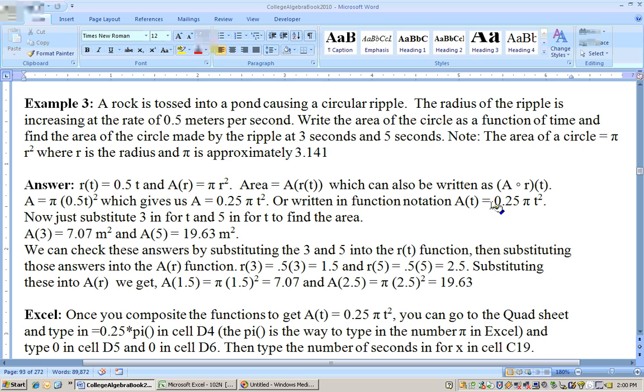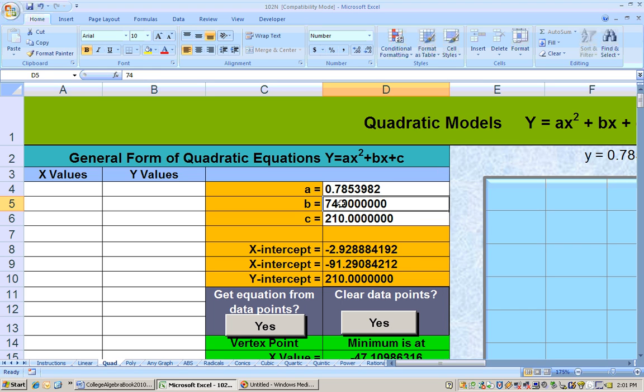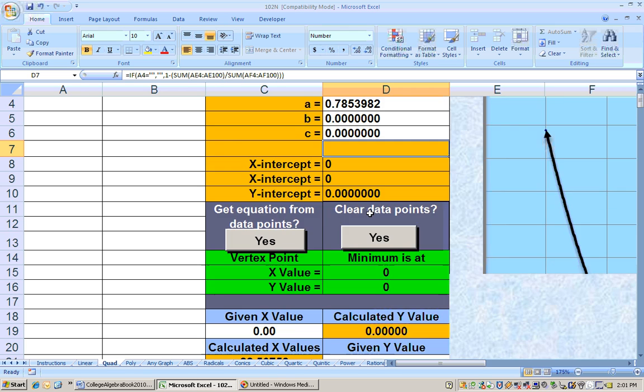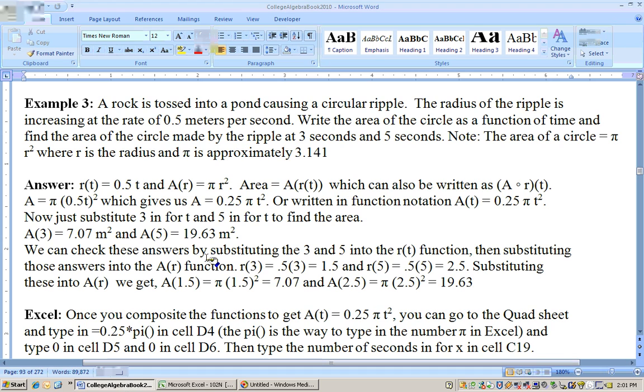Then we would substitute in and find the area in 3 seconds by doing A(3), and in 5 seconds by doing A(5). But this is really a quadratic equation, so we could type this coefficient, 0.25 pi, into the Excel quadratic sheet. I will type equals 0.25 times pi, and the way you type pi on Excel is pi open parentheses closed parentheses. Then I can put in my zeros for my linear and constant term because it was just 0.25 pi t squared. Then I can put in 3 and get what the area is in 3 seconds, and put in 5 and get what the area is in 5 seconds.